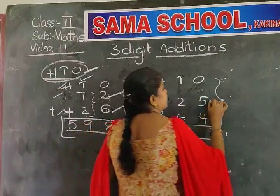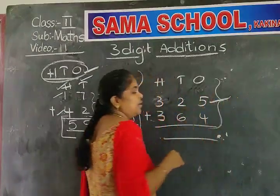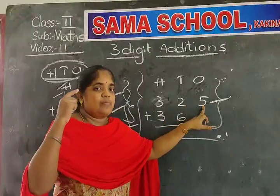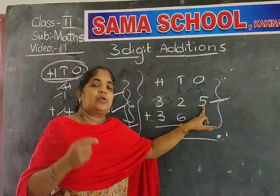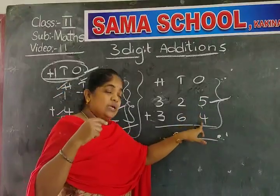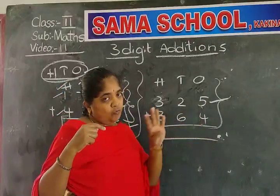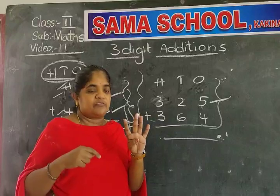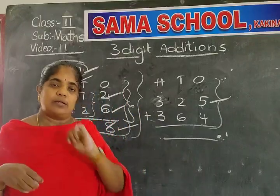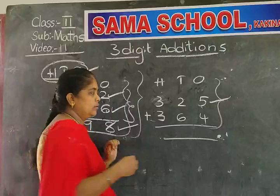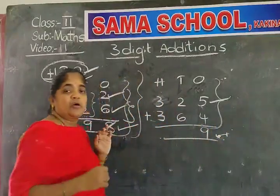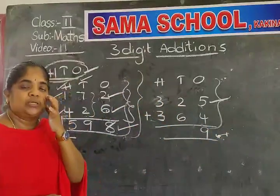Five is the first number in the ones place — keep five in the mind. Take out four fingers. Five after: six, seven, eight, nine. Five plus four equals nine.